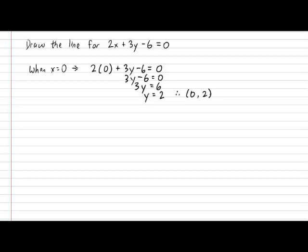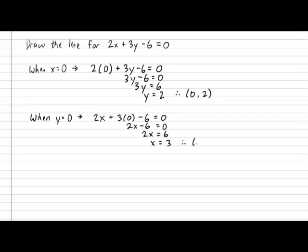How about when y equals 0? Substituting gives us 2x plus 3(0) minus 6 equals 0, simplifying to 2x minus 6 equals 0, therefore 2x equals 6, so x equals 3. That gives us a second point at (3, 0). With these two points, that's all we need to draw the straight line.